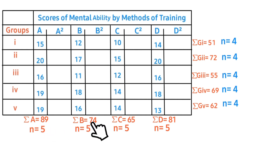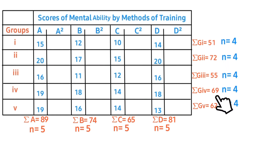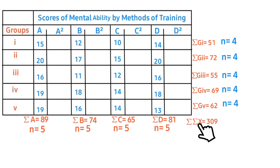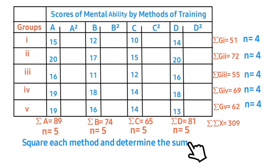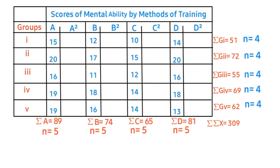Calculate the grand total. Add all the column sums together, or alternatively add all the row sums together. We represent the grand total with the summation symbol, and it gives 309. Next, square each method value and determine the sum. For the first column: 15 squared, 20 squared, 16 squared, and 19 squared.